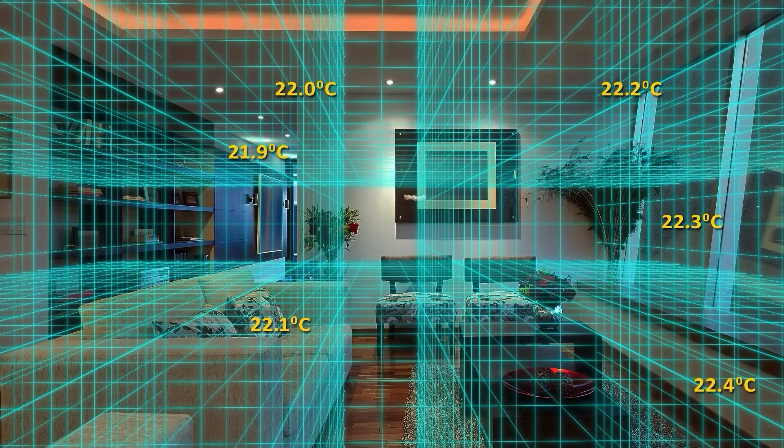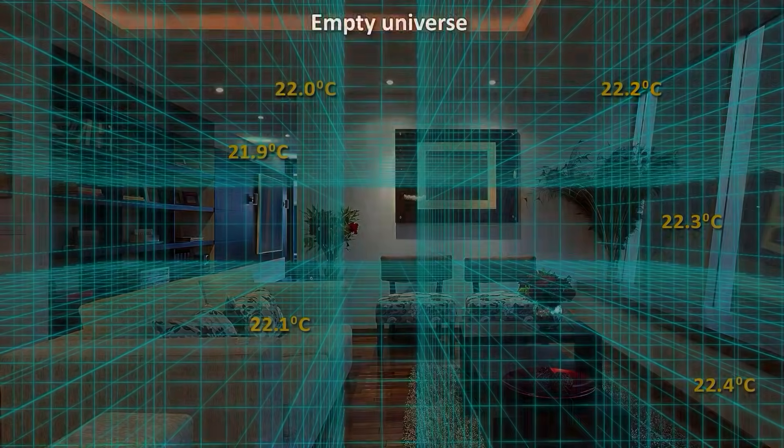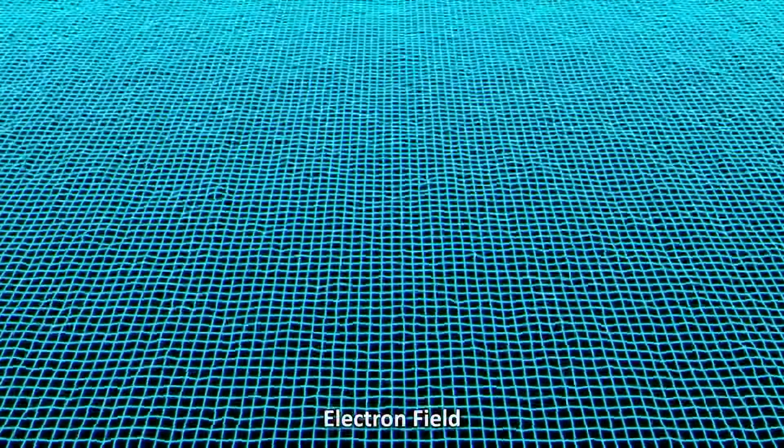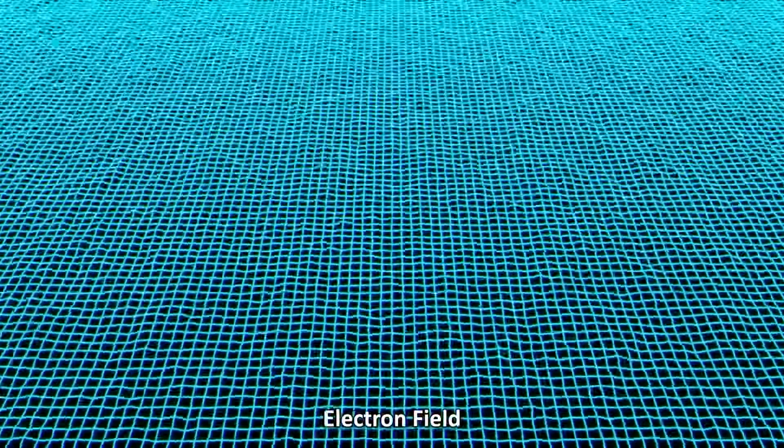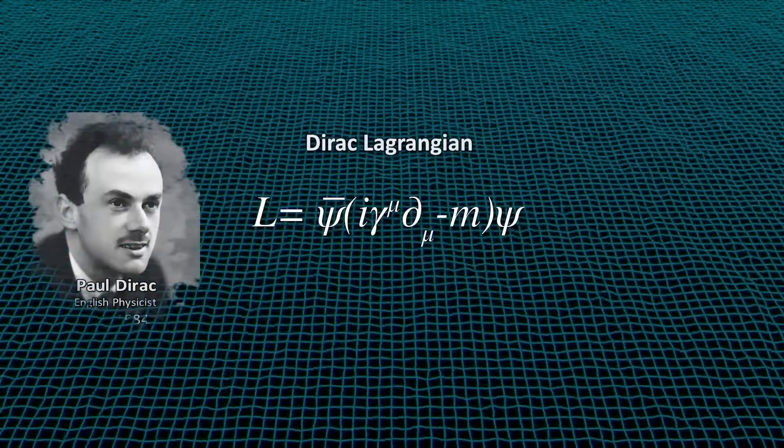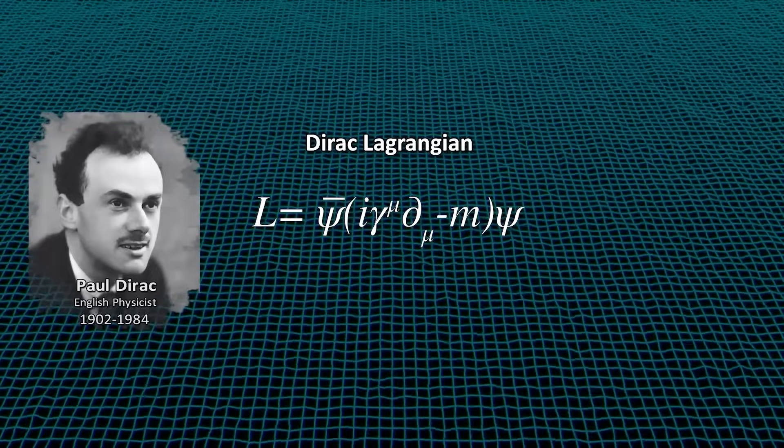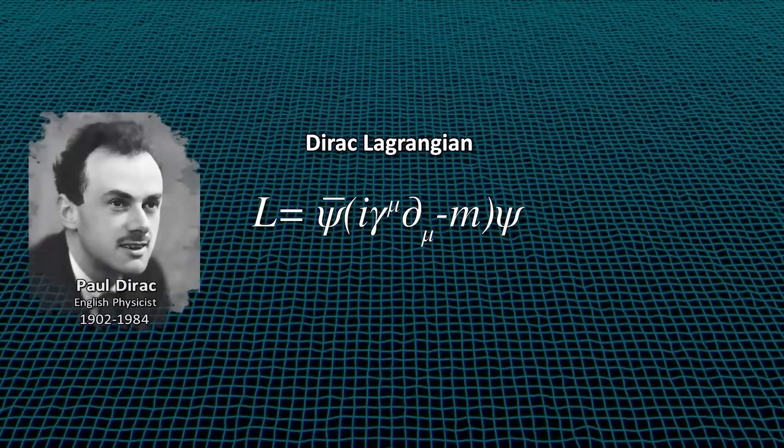It represents certain properties in space time. So in our empty universe, with literally nothing, we imagine a field that exists everywhere. Let's make it more concrete. We can say that this is the electron field. We can model such a field with the Dirac Lagrangian, which is an equation describing all fermion fields, including the electron field.